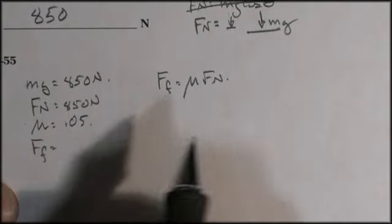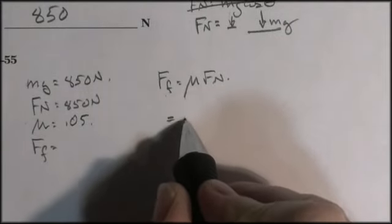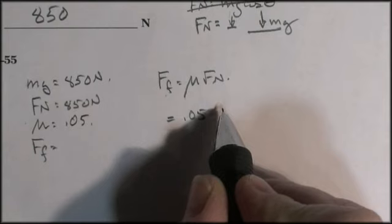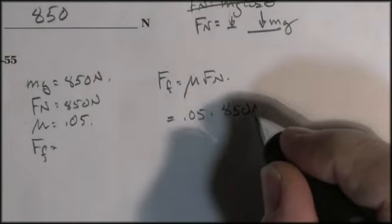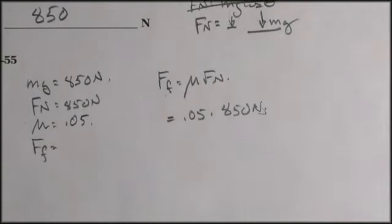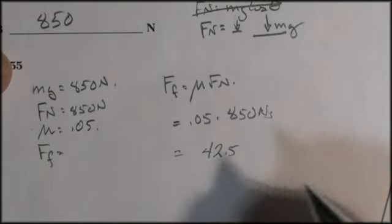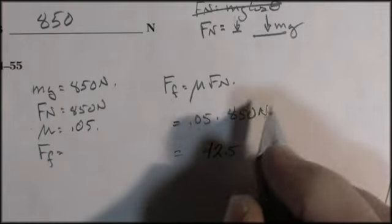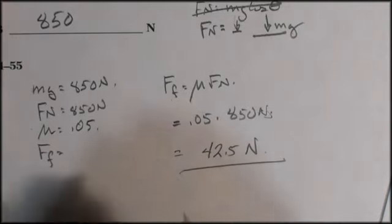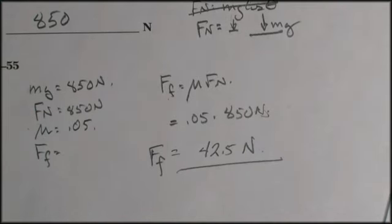We're looking for the force of friction. And so we just plug that in. 0.05 times 850 newtons. Get the calculator out. Should give you an answer of, should be about 42.5. The coefficient of friction has no units, so we're left with newtons. So the force of friction would be 42.5 newtons. And that's all they're asking for.